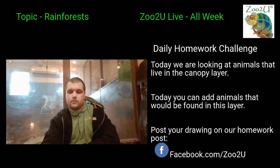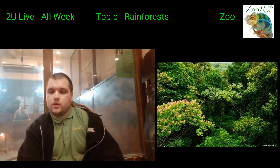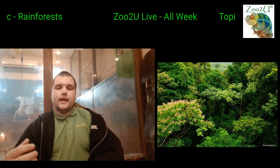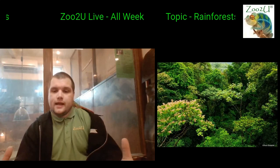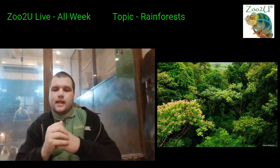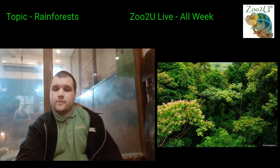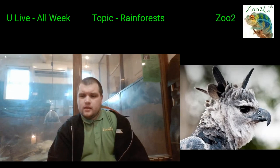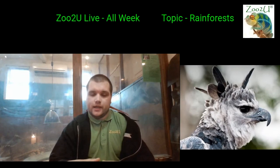The canopy layer basically looks like a thicket of leaves all together. On the forest floor the trees grow up using their trunks, and at the top all the leaves come together, creating like a blanket of leaves. That makes it really difficult for predators — like the harpy eagle when the picture comes up — to pinpoint where the prey is, because the leaves all come together like a blanket.